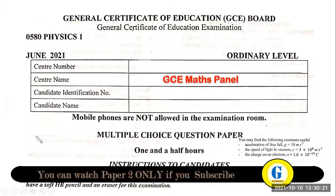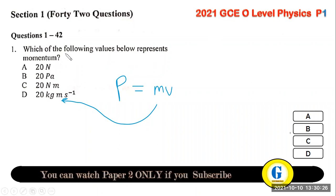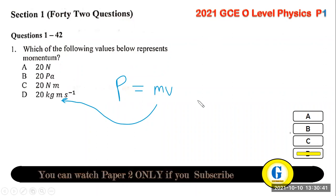Question 1 asks which of the following represents momentum. Momentum of a particle is the product of mass and velocity — mass is in kilograms and velocity is in meters per second. The answer is D.